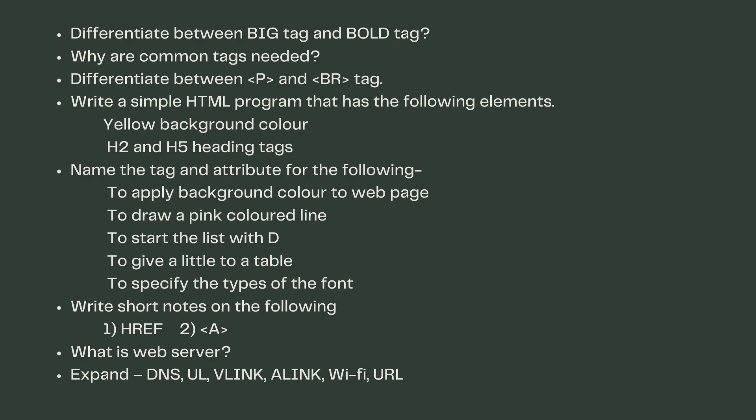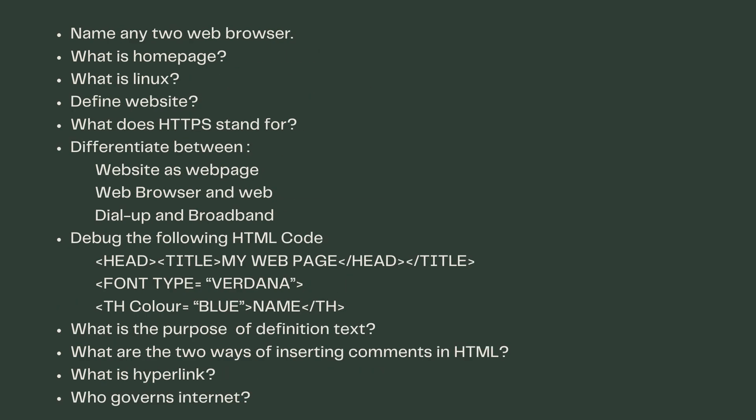Name the tag and attribute for the following: to apply background color to a web page, to draw a pink color line, to start a list with D, to give a title to a table, to specify the type of font. Write short notes on href. What is a web server? Expand DNS. Name vlink, alink, Wi-Fi, and URL. Name any two web browsers.